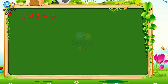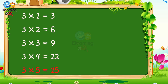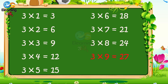3 1s are 3. 3 2s are 6. 3 3s are 9. 3 4s are 12. 3 5s are 15. 3 6s are 18. 3 7s are 21. 3 8s are 24. 3 9s are 27. 3 10s are 30.